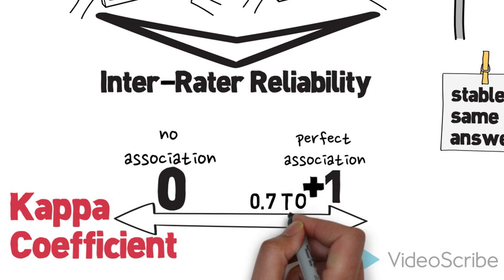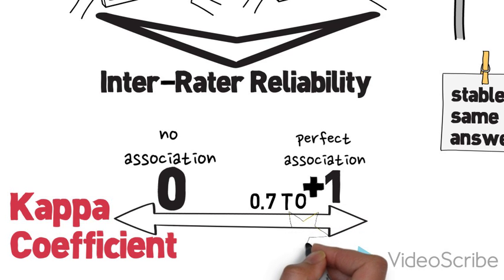An item with good reliability will have a kappa coefficient, or correlation, between 0.7 and 1.0.